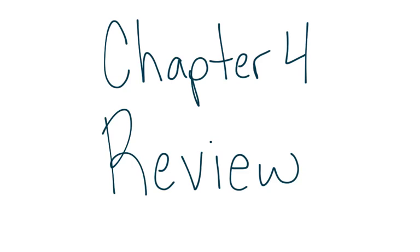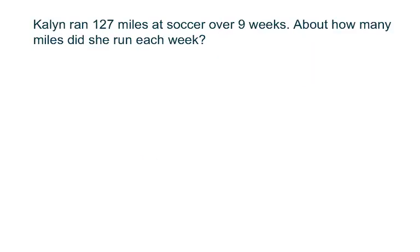We're going to look at a few word problems today. Our first word problem says Kaylin ran 127 miles at soccer over nine weeks. About how many miles did she run each week? Think about this problem. What should we do to solve it? We need to estimate the quotient because the word right here says 'about.' So 'about' tells us we need to estimate our quotient and we're going to estimate our quotient using compatible numbers.